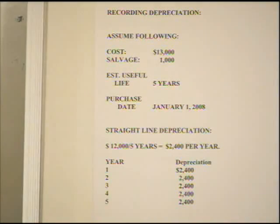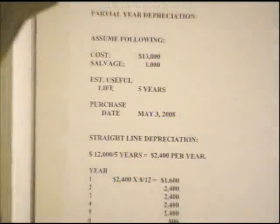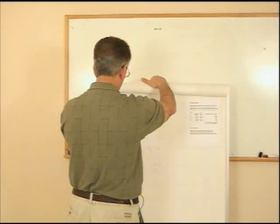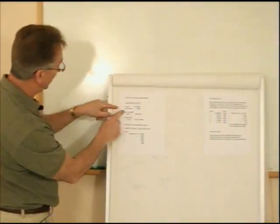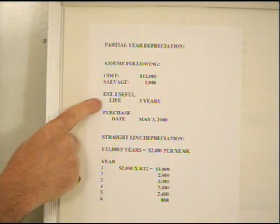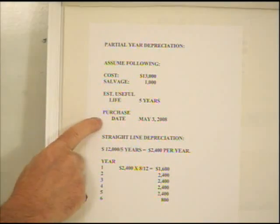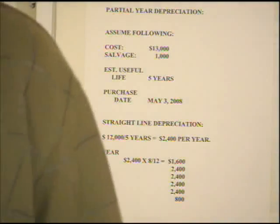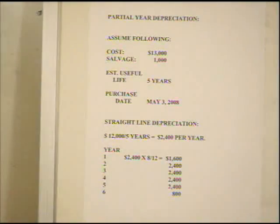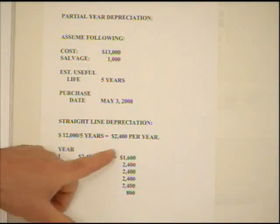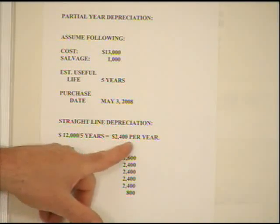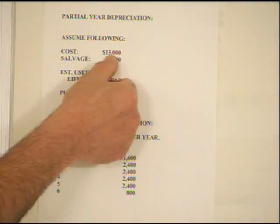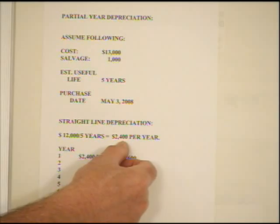Now let's look at a partial year for straight-line depreciation. The same assumptions apply: cost is $13,000, salvage value is $1,000, estimated useful life is five years. But this time the purchase date is May 3rd, because in reality most companies do not go out on the first day of the year and purchase an asset. The annual depreciation is still $2,400 — same calculation: cost minus salvage value is $12,000, divided by 5 years. But I can't take the full $2,400 the first year because I didn't have it the whole year.